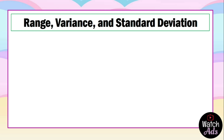If you have watched my lesson about measures of central tendency, we used to compute the three different measures one at a time. Now for our measure of variability, I tried to combine it with just one set of data, and then we find the range, variance, and standard deviation all at once to make it easier and save time explaining.